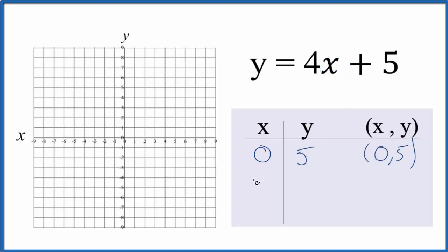I think I'll next put negative 1 in for x. Negative 1. 4 times negative 1 is negative 4 plus 5. That gives us 1.